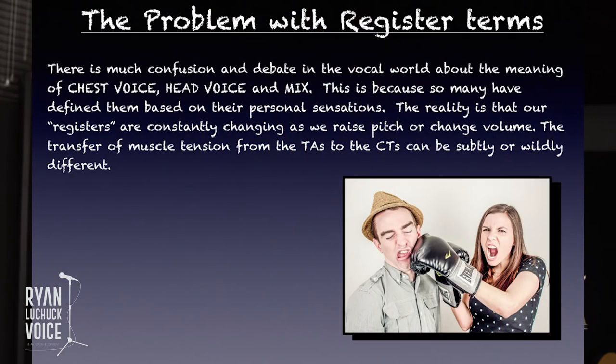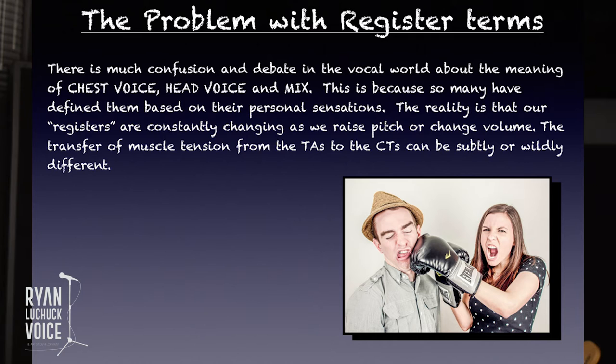The reality is that our registers are constantly changing as we raise pitch and change volume. That's because the transfer of tension from the thyroarytenoids to the cricothyroids can be subtly or wildly different. What I'm describing is a singer's ability to transfer muscular tension in a way that the listener can't hear it happening — or not. For most developing students, they don't have that ability yet. What I'm trying to do when singing an octave arpeggio is transfer that muscular tension so subtly that you can't hear it, creating the illusion of one register.